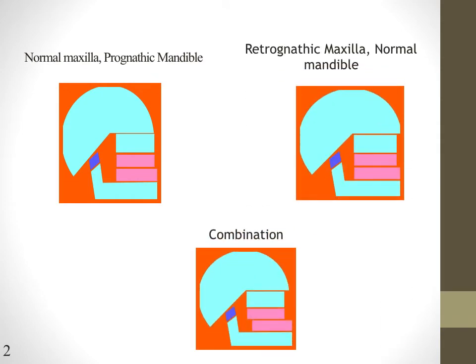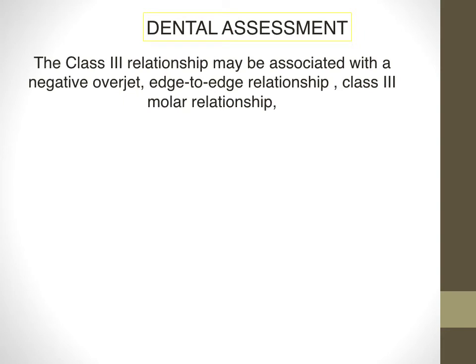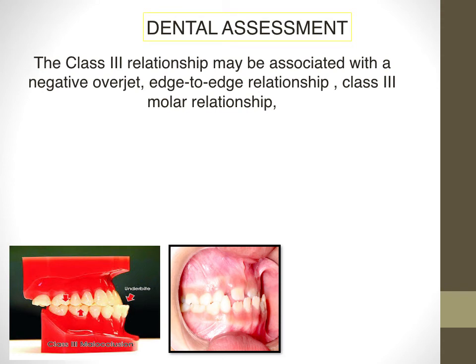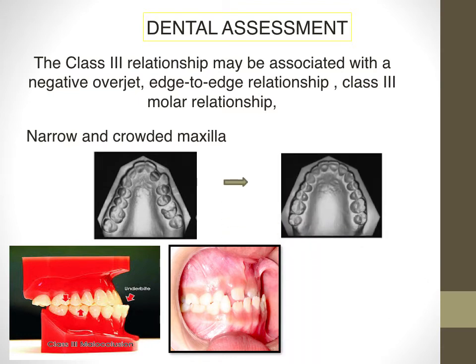The components of class 3 malocclusion can be a prognathic mandible, a retrognathic maxilla, or a combination of both. Dentally, a class 3 patient presents with a reverse overjet anteriorly, an underbite rather than an overbite, and most commonly a narrow and crowded maxilla. The easiest treatment when maxillary deficiency is the etiology is to expand the maxilla — by passive, active, slow, or rapid expansion depending on the patient's age and etiology.